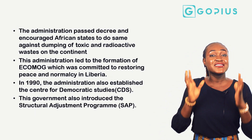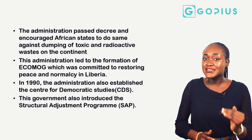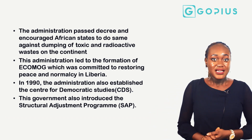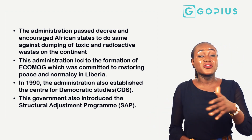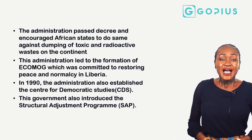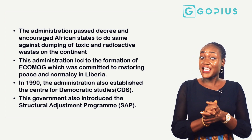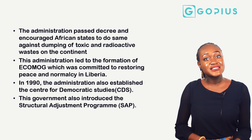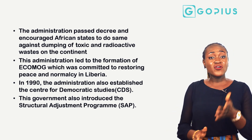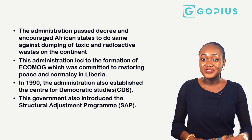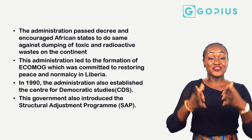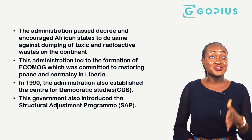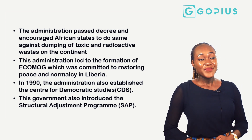The Babangida administration passed a decree and encouraged African states to do the same against the dumping of toxic and radioactive wastes on the continent. This administration also led to the formation of ECOMOG and was committed to restoring peace and normalcy in Liberia. In 1990 the administration established the Center for Democratic Studies, which encouraged and introduced democracy, and the government also introduced the Structural Adjustment Program.